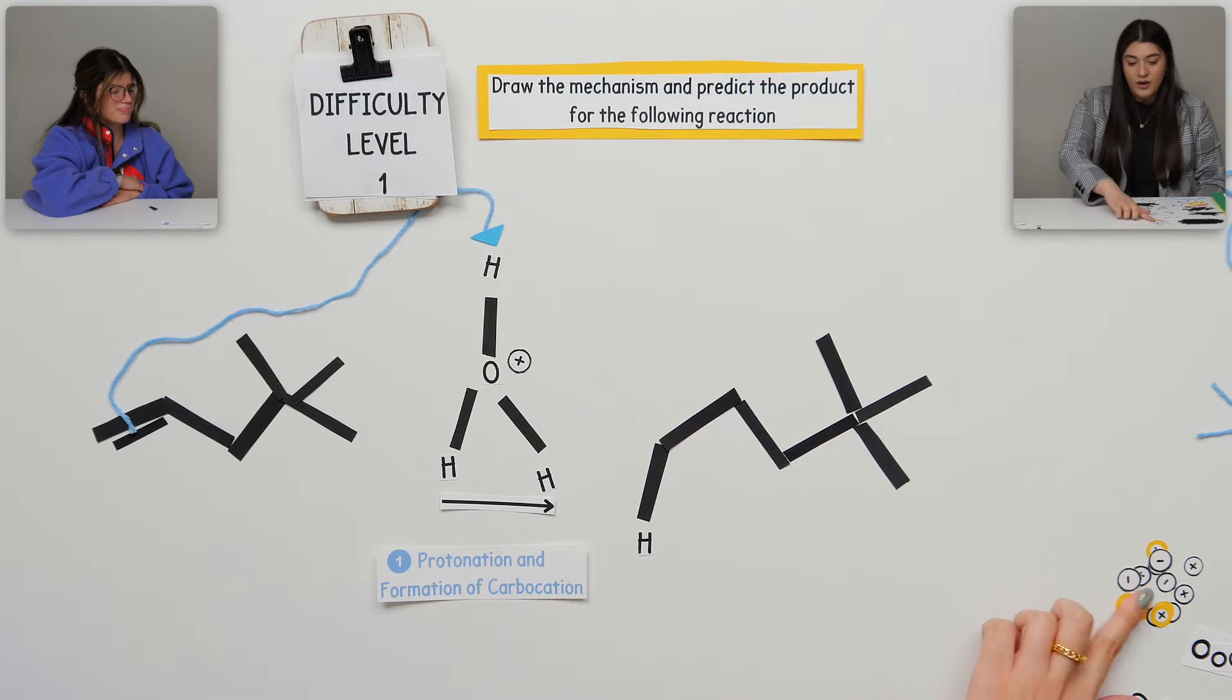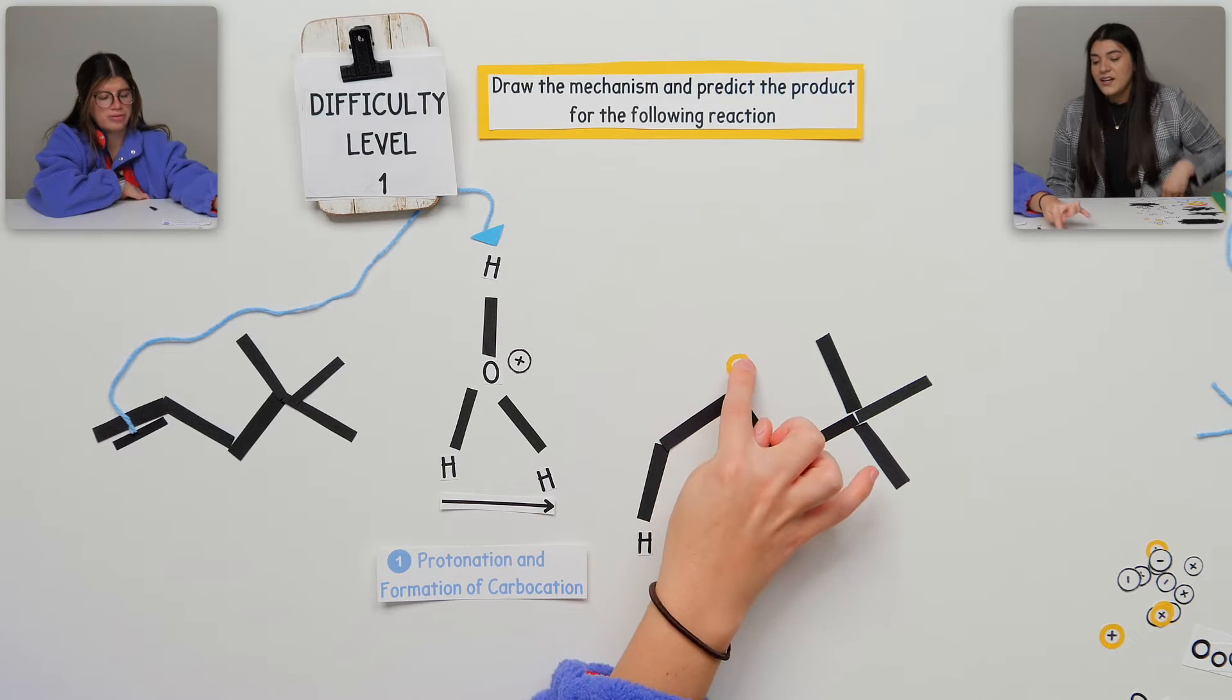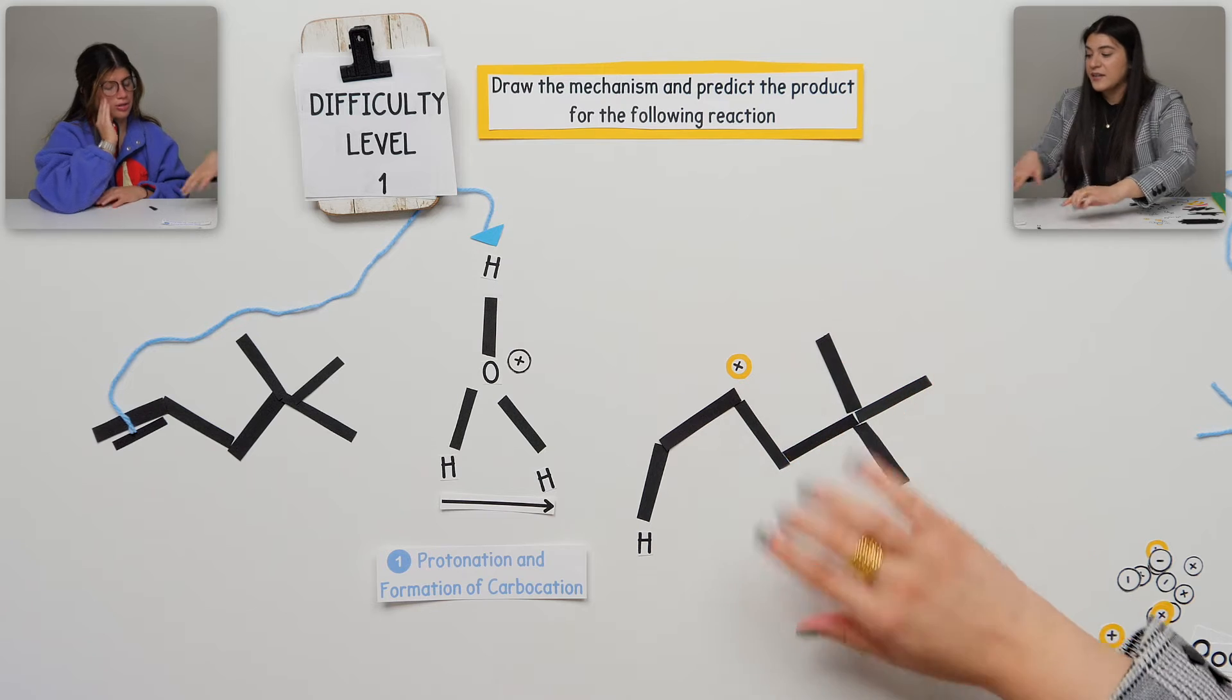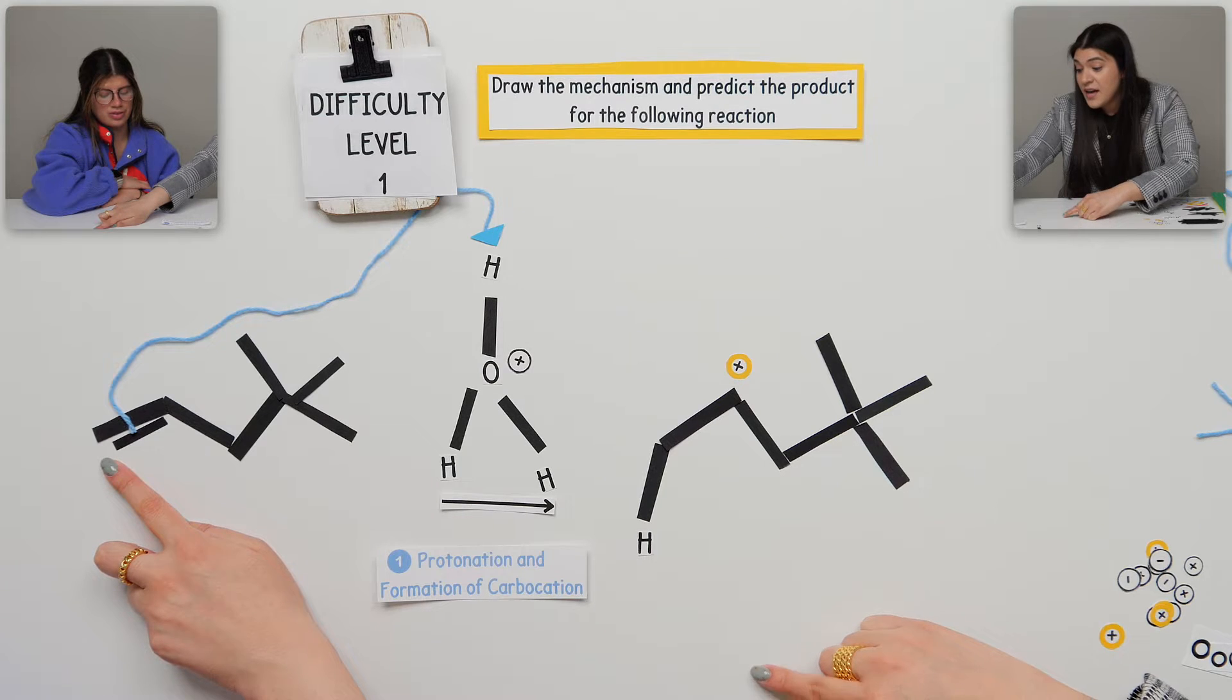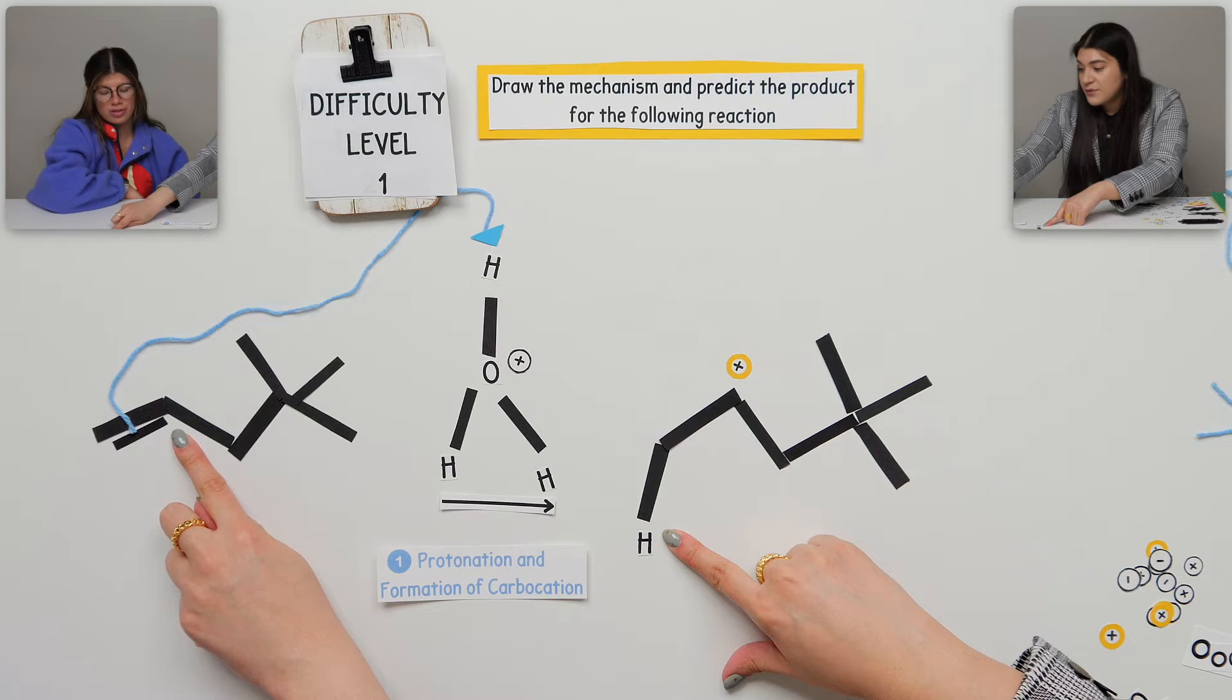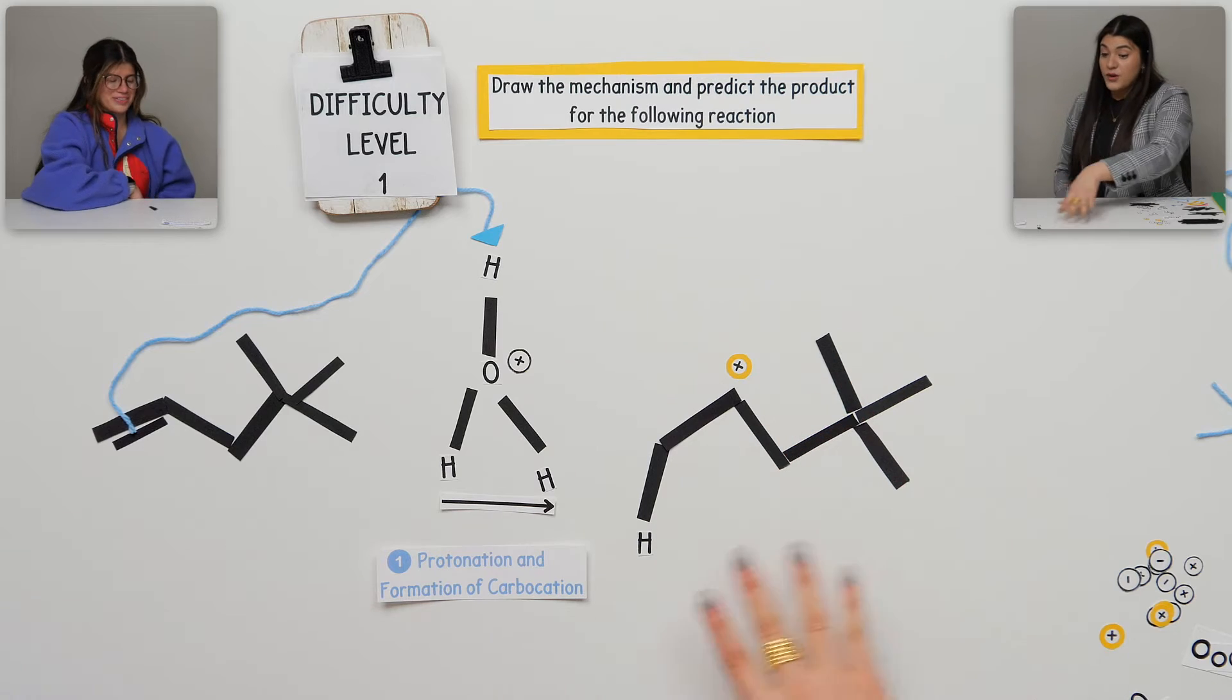So where is our carbocation in this case? That one will be right here, isn't it? Good. So pretty much your options for carbocations, it's going to be whatever was involved in that double bond, right? So this carbon, we said that one is the least substituted. That's why it's going to have the hydrogen go there. And then the more substituted one, because it's the more stable one, that's where the carbocation is going to be. So great. We formed our carbocation.